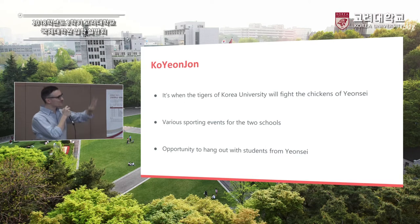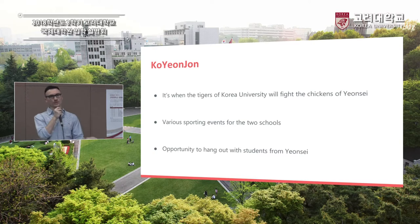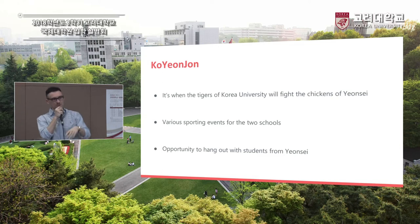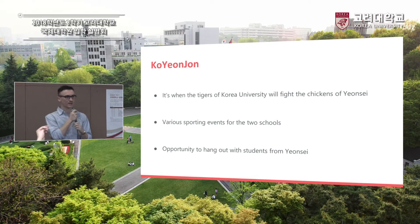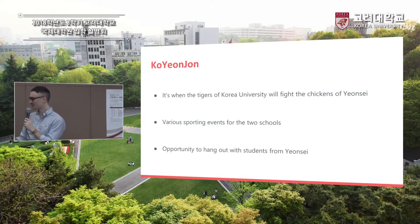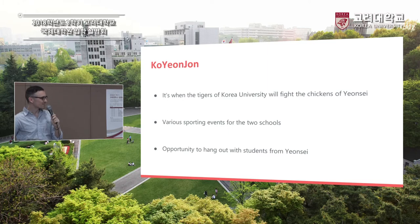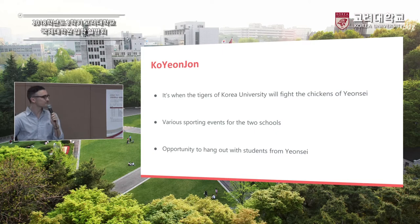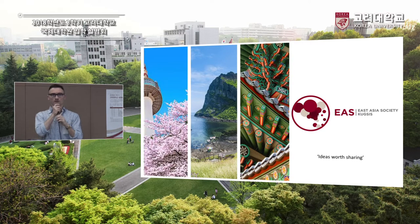Ko Young John is basically a day where we meet with Yonsei — last semester it was here at Korea University, this semester it'll be at Yonsei. We have sport events and compete with each other. Hopefully this semester we'll win because last semester we lost the main event. It's also a great opportunity to hang out with students from Yonsei. That's me done with the Student Council — I hope you enjoyed it.